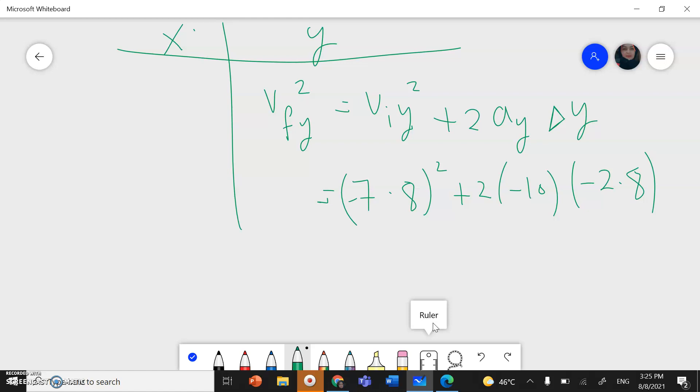Take square root to find V final in y direction. And you should get 64.4 meter per second. And this should be negative. This is V final in y direction because the ball is moving down. Now we need the final speed.